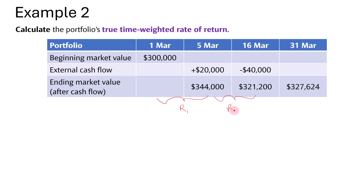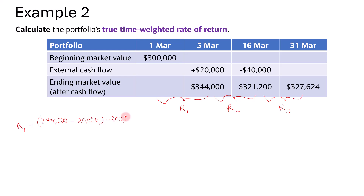We'll have sub-period return one, sub-period return two (due to the cash outflow of $40,000), and sub-period return three. For sub-period return one, from $300,000 to $344,000: we take 344,000 and remove the external cash flow of $20,000, because without the cash flow the fund value is actually $324,000 — that reflects the manager's performance. Dividing 324,000 by 300,000 gives us 8%.